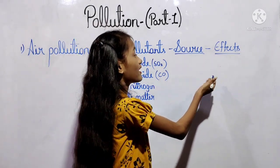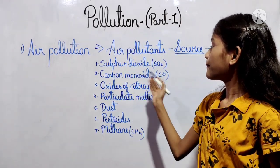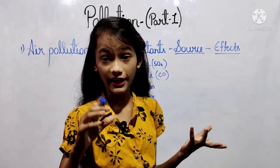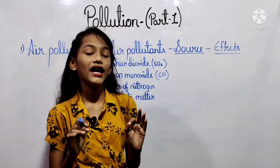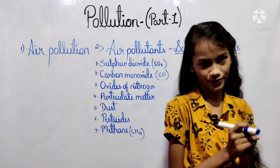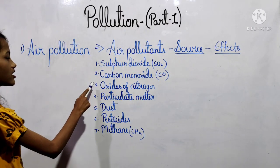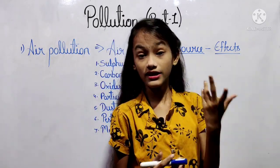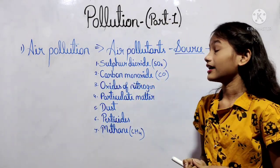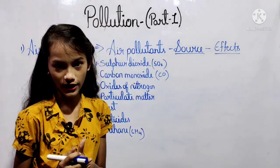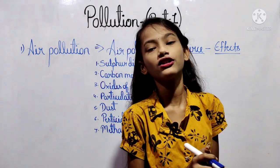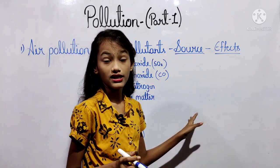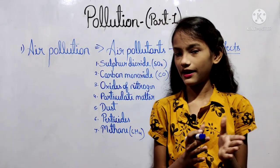The second air pollutant is carbon monoxide (CO). Its source is vehicular and industrial smoke, and its effect is lowered oxygen-carrying capacity of the blood. The fourth pollutant is particulate matter — its source is vehicular and industrial smoke, and its effect is respiratory diseases.